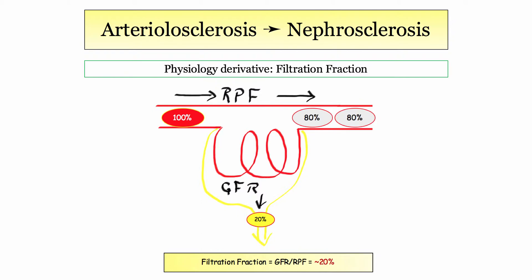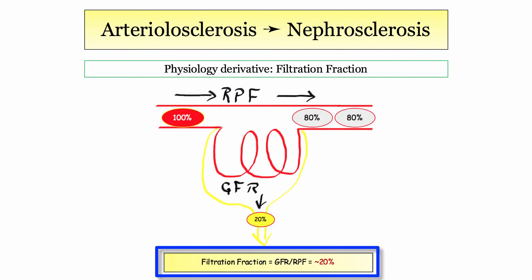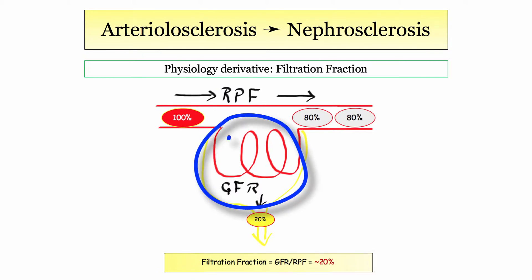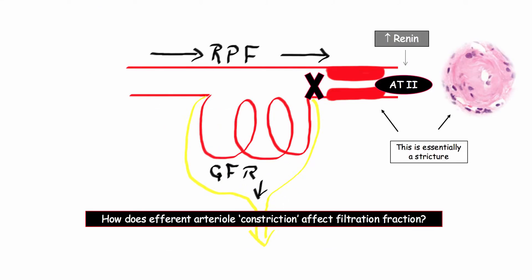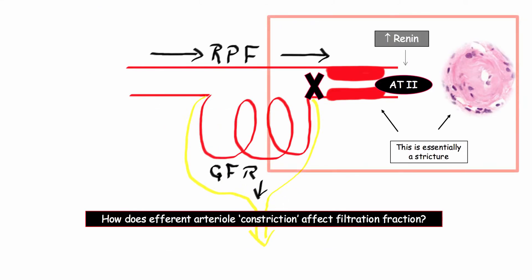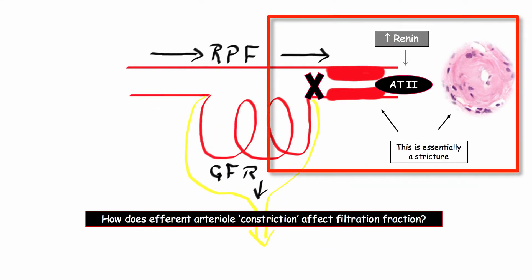Let's review the filtration fraction. The formula for filtration fraction is GFR divided by renal plasma flow. Conceptually, 100% of the blood enters the glomerulus, but only 80% exits — 20% has been filtered. That is a normal filtration fraction. That's what a healthy kidney does: filters blood and makes urine.